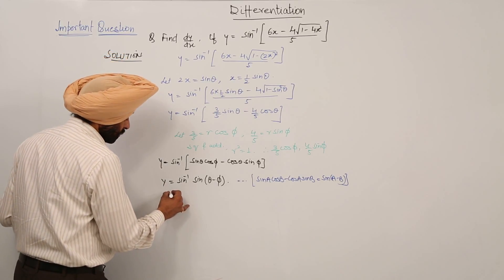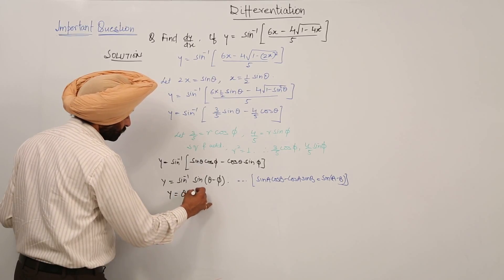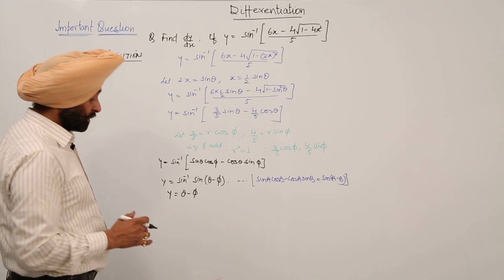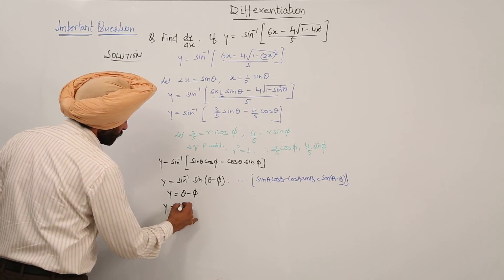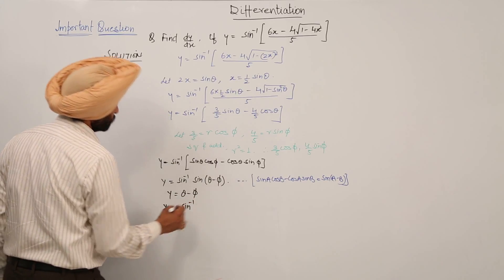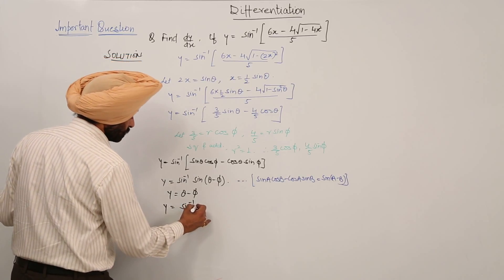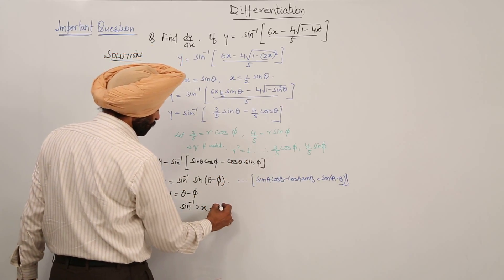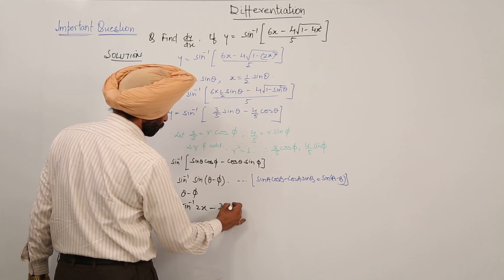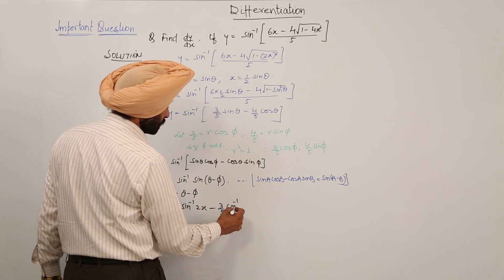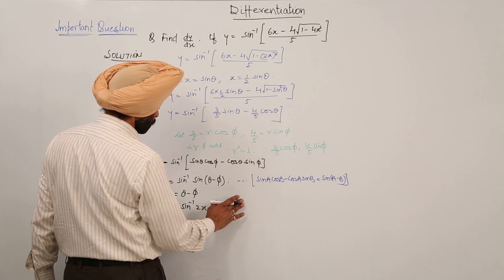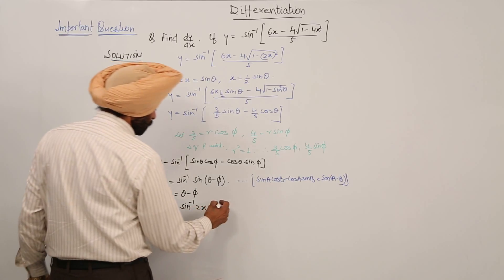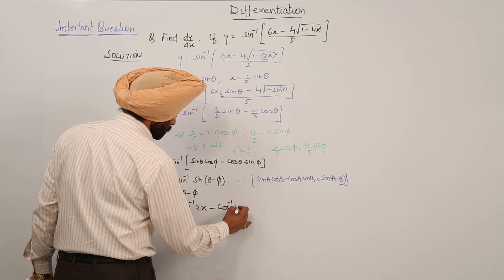So finally y is equal to θ minus φ. Now putting back what θ and φ are: y is equal to sin inverse (2x) minus φ, where φ can be taken from either value.